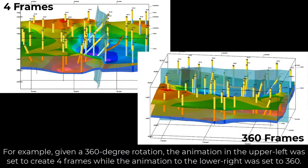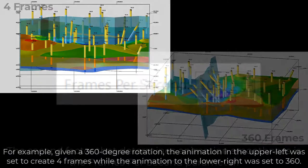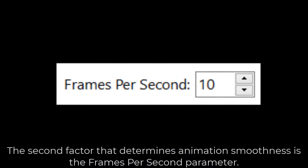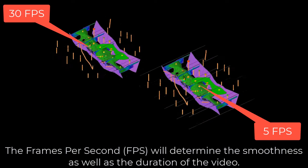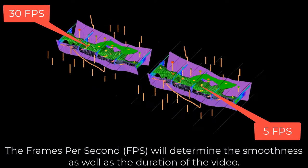The second factor that determines animation smoothness is the frames per second parameter. The frames per second, or FPS, will determine the smoothness as well as the duration of the video.